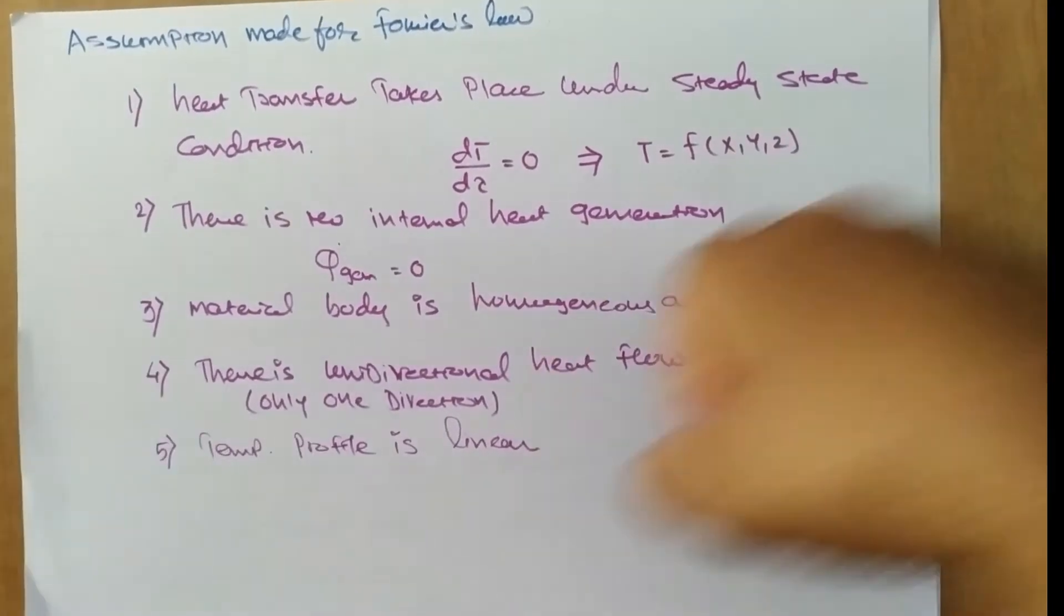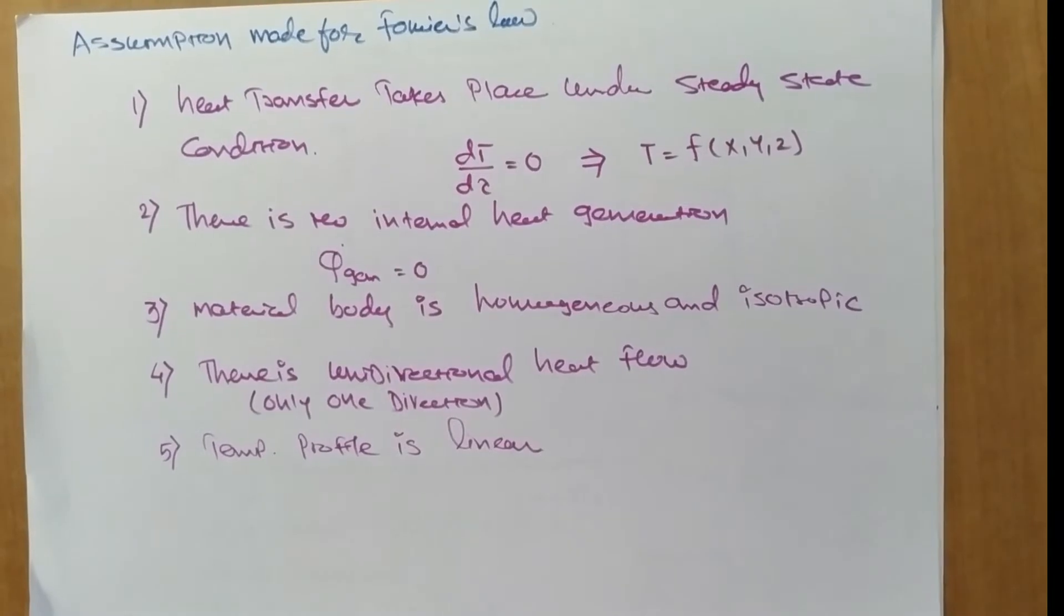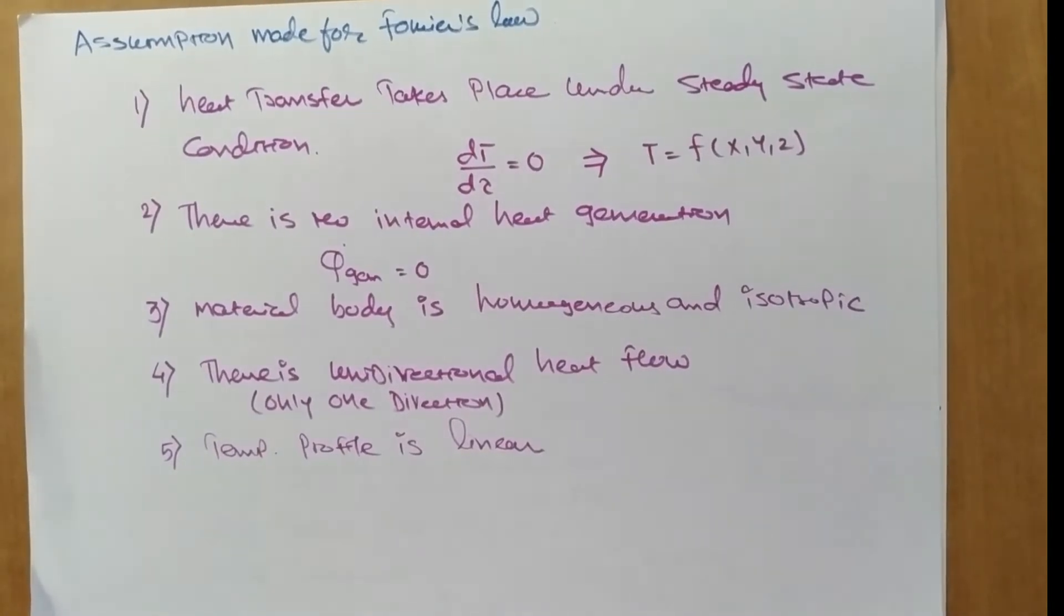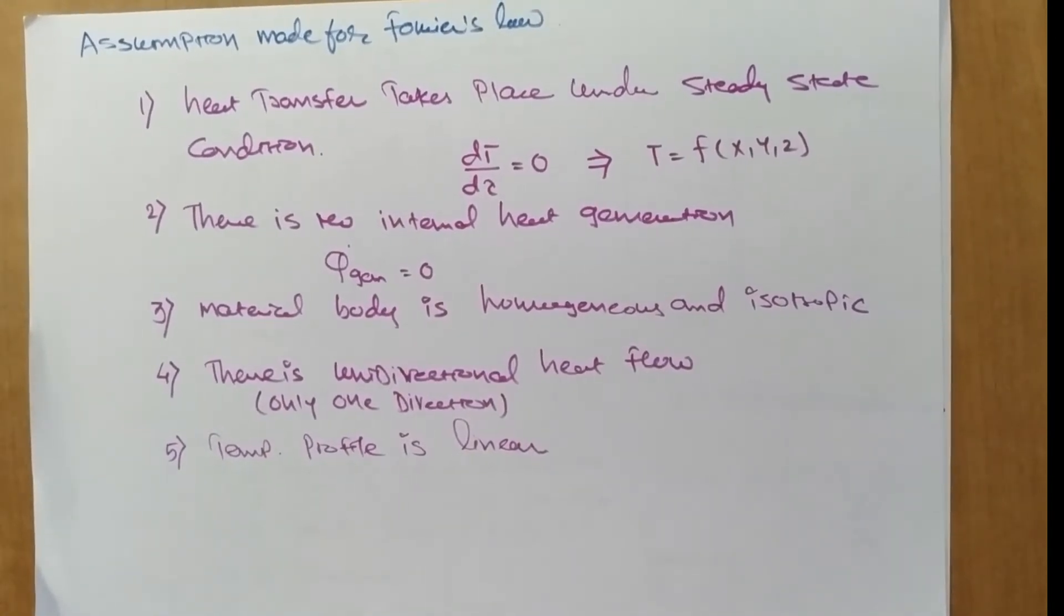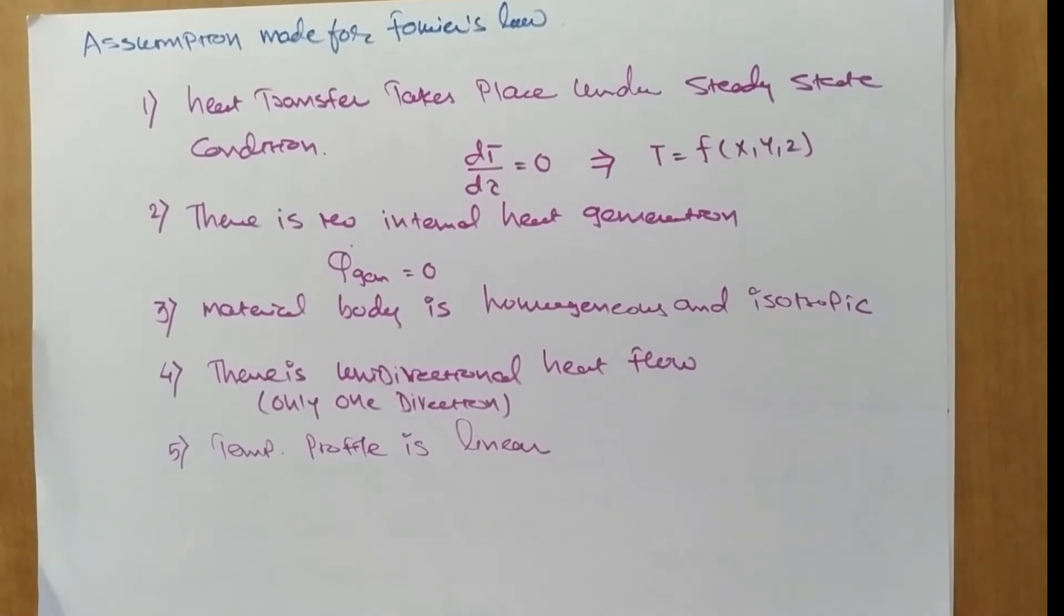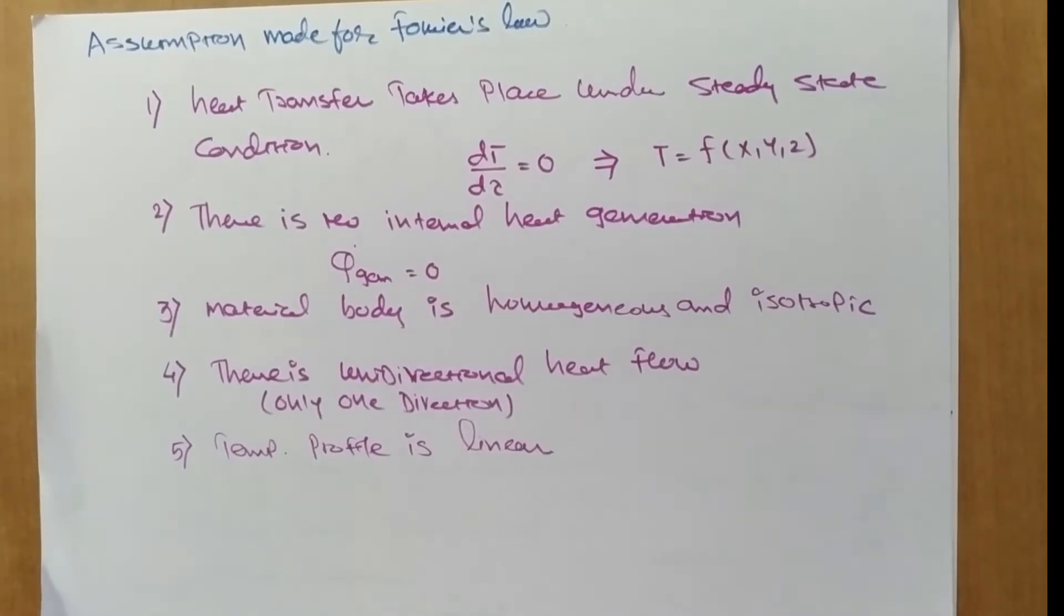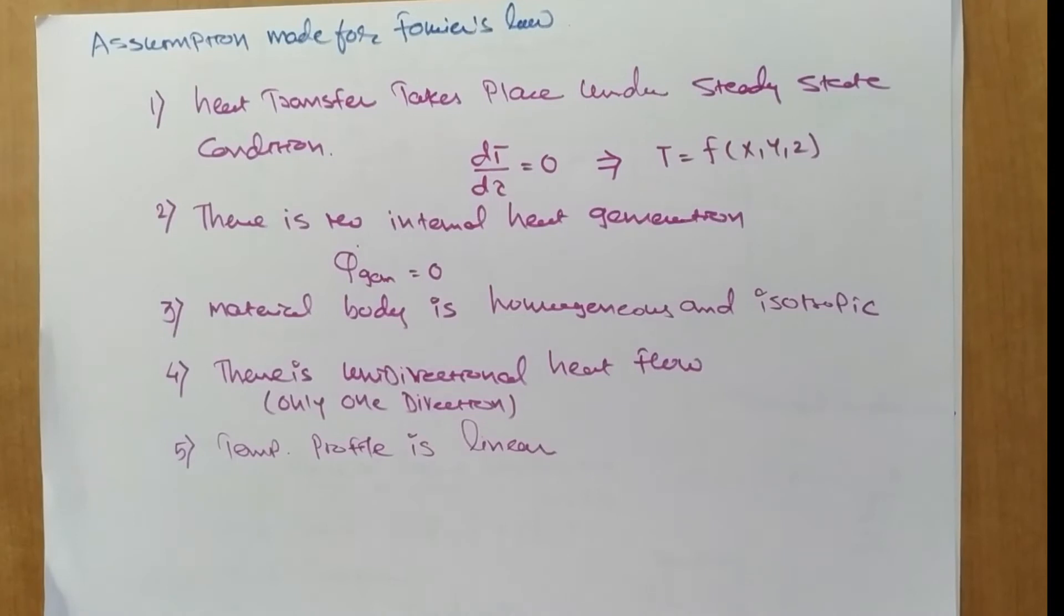Now we are going to discuss various assumptions made for Fourier's law. There are five different assumptions that we made for derivations of Fourier's law. Before we discuss general heat conduction in three dimensions, we need to refer to these assumptions.